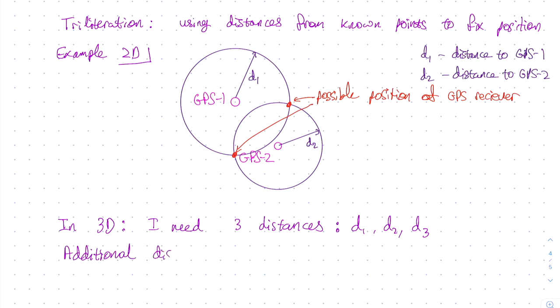Now if my GPS receiver can measure an additional distance, or more than one distance, then I can lift the ambiguity and choose one of the two possible points that I have found by trilateration.